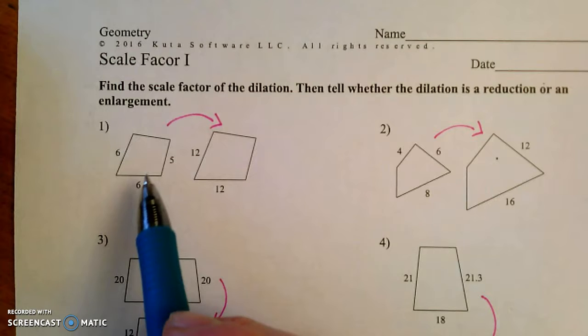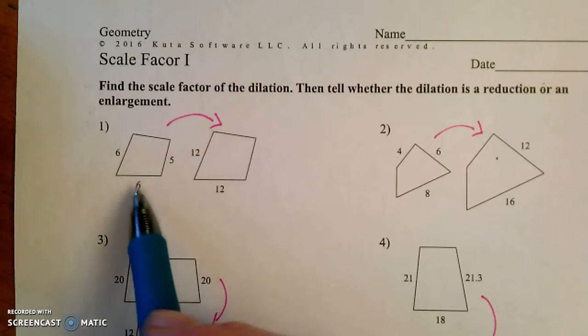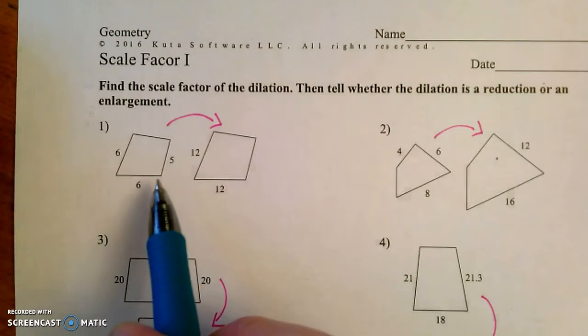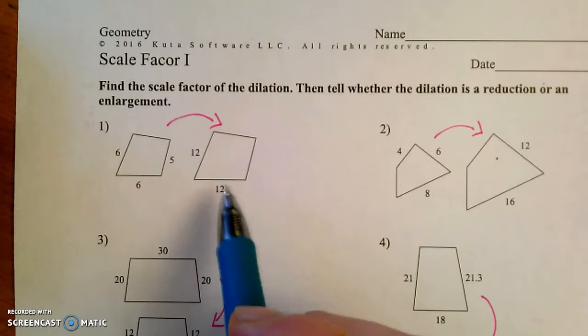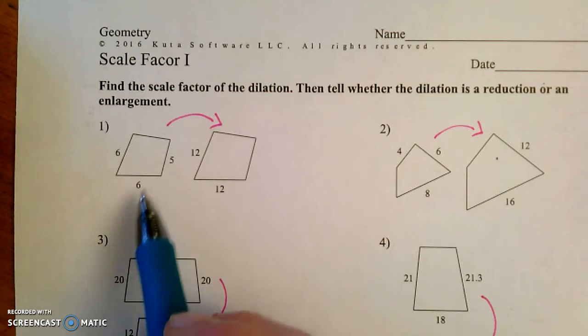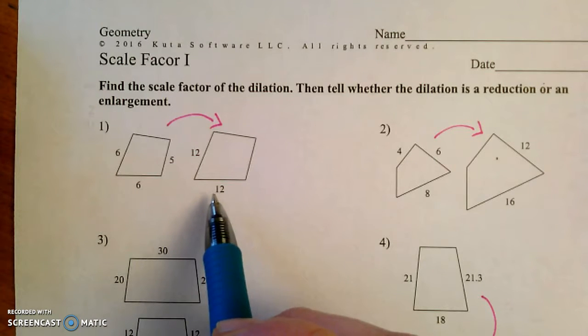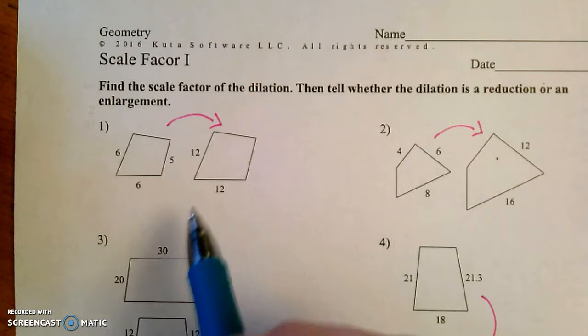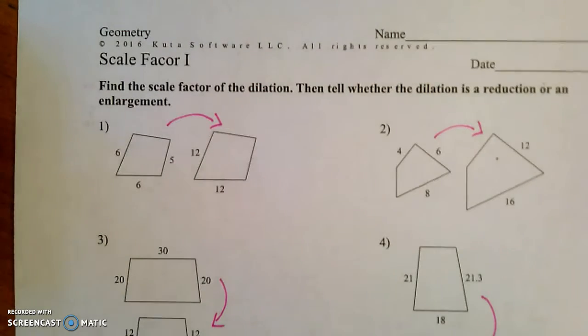The scale factor is the number that each of these sides were multiplied by in order to get the sides on the other figure. In this case, 6, 6, 12, 12, it looks like each of these sides was multiplied by 2, so scale factor is 2. But I'm going to show you how to calculate that in case it's not such a simple problem.